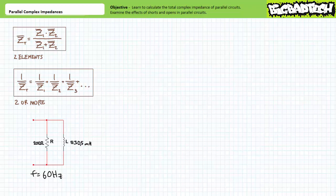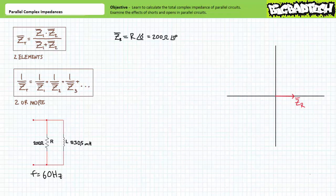Allow me to demonstrate the use of these methods with a couple of illustrated example problems. Consider the parallel or side-by-side relationship of a 200 ohm resistor and a 530.5 millihenry inductor subjected to sinusoidal AC voltage with a frequency of 60 hertz. We need to convert these individual components to complex impedances and then calculate the total impedance using one of our two available methods. Because this is an arrangement of only two elements, the logical choice of methods is the quick and dirty method. The 200 ohm resistor is a complex impedance of 200 ohms at an angle of zero — you don't need a formula to calculate your resistive complex impedance; all you do is take the resistance value and stick an angle of zero degrees behind it.